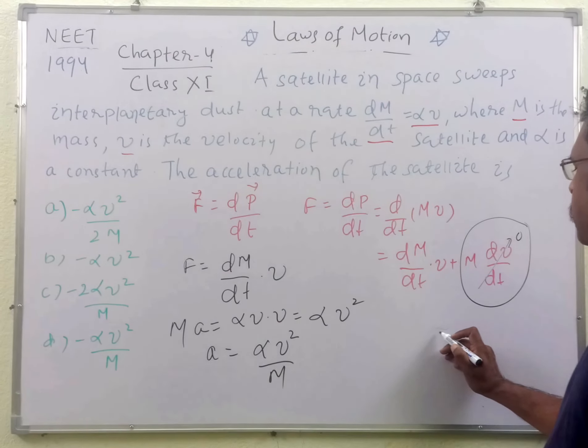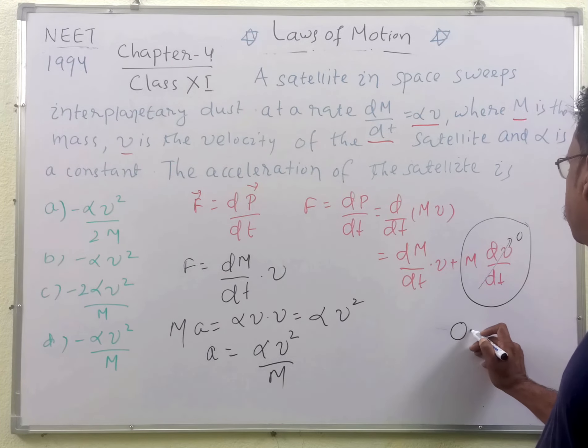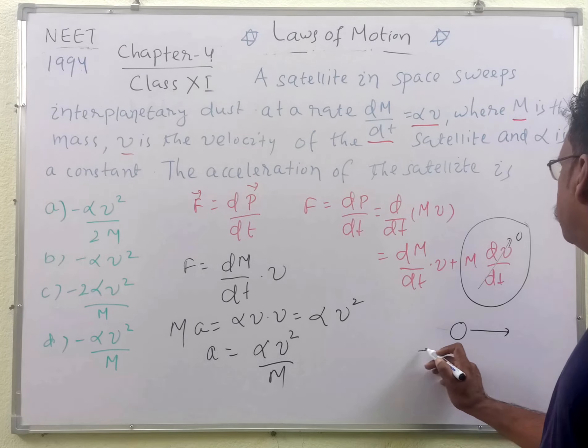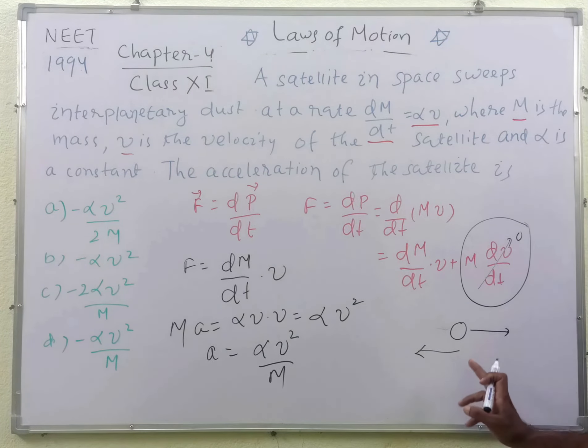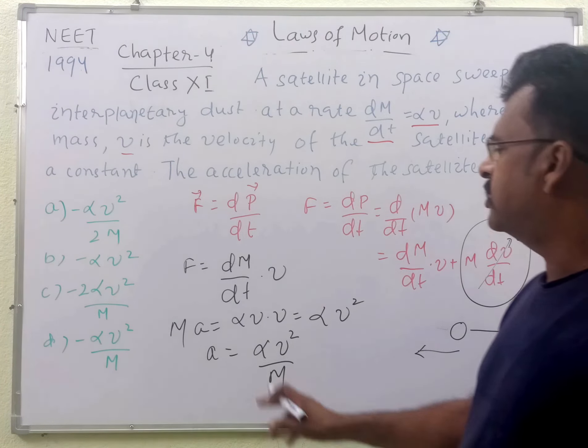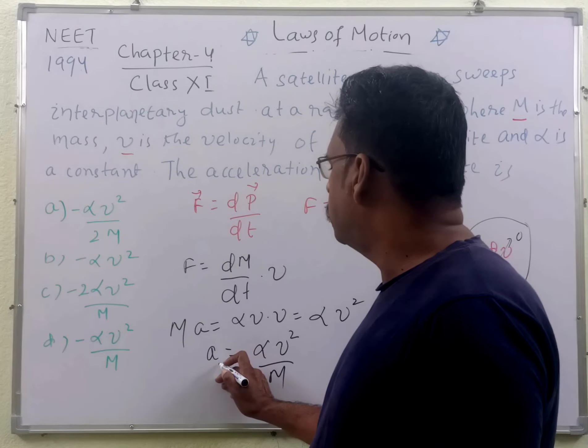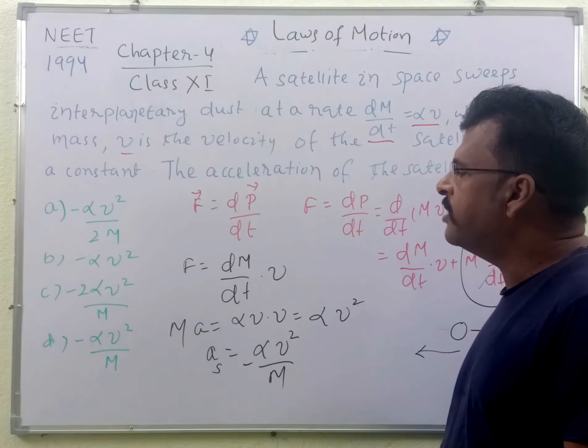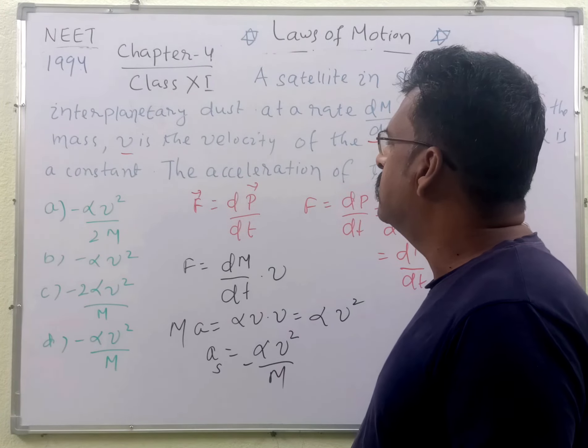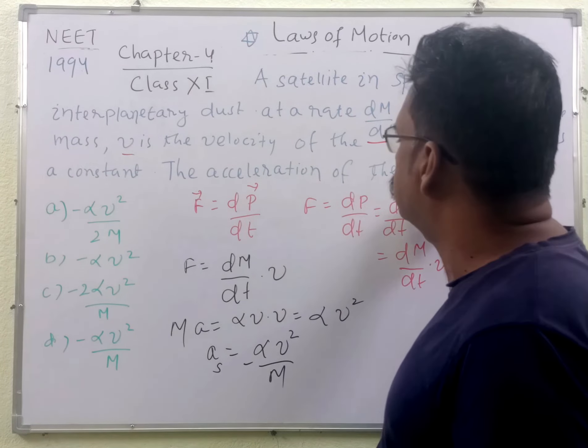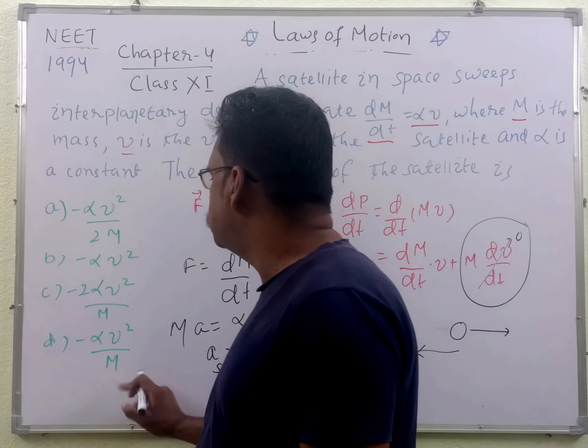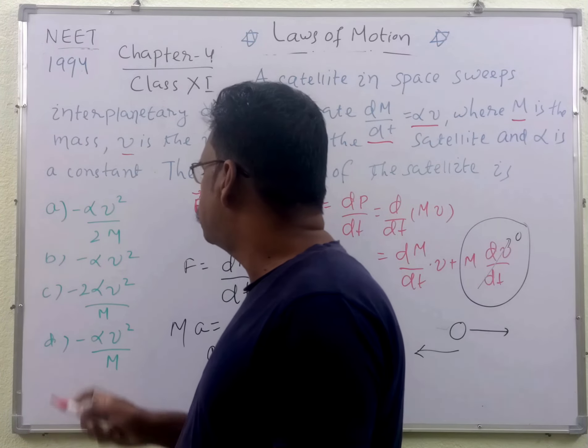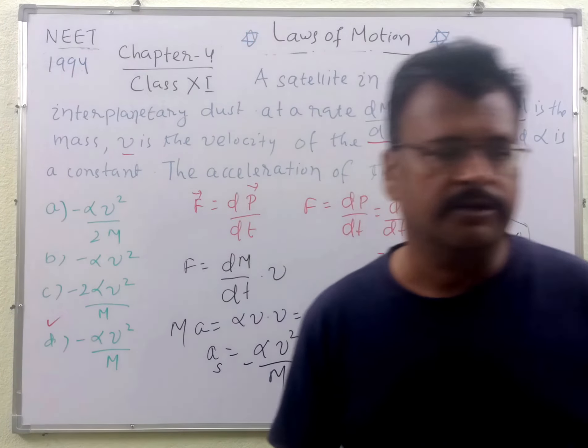If the satellite is moving this way, the dust will move to this side, so the acceleration of the satellite will be opposite to the direction of the interplanetary dust. Therefore, the acceleration of the satellite will be -αv²/M, and this is option d. So option d is correct for this question.